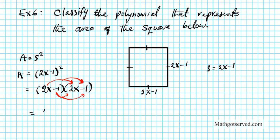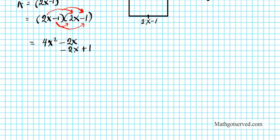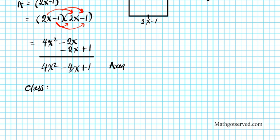So we add the like terms: 4x squared, and the two middle terms give us minus 4x, plus 1. So this is the polynomial that represents the area. What is the classification? This has three terms, so this is a trinomial. The degree of the first term is 2, the second term has degree 1, the last term has degree 0. So the degree is 2. There you have a trinomial of degree 2.